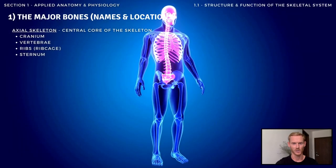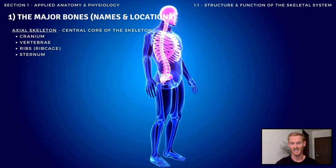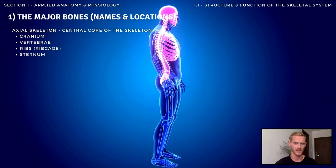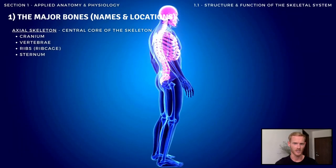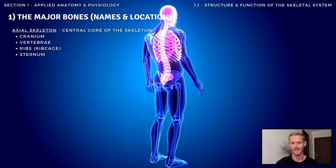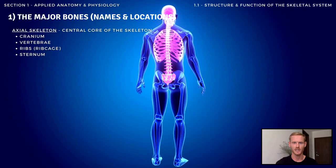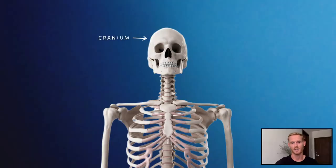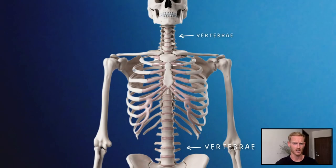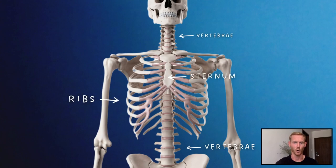The axial skeleton is the central core of the skeleton to which the arms and legs are attached. It's comprised of the cranium or skull, the vertebrae which sit on top of one another to form the spine or vertebral column, the ribs, and the sternum or breastbone.